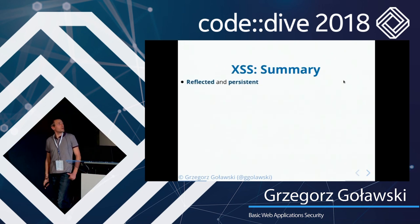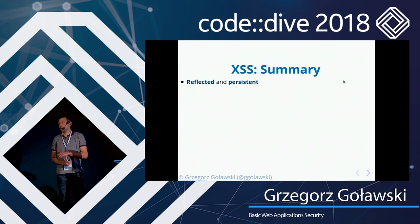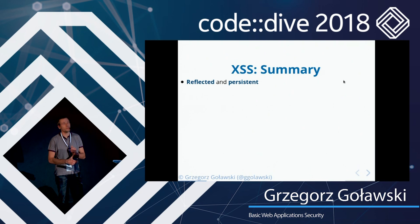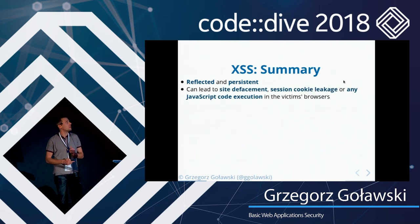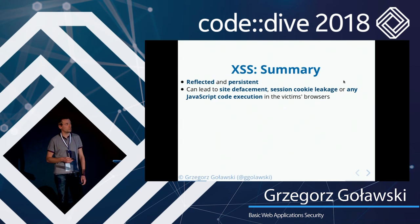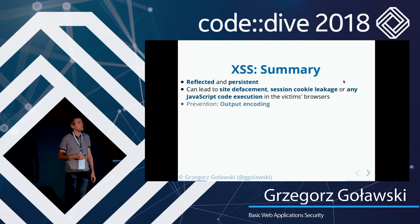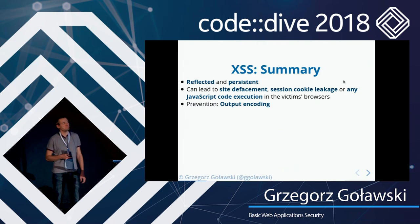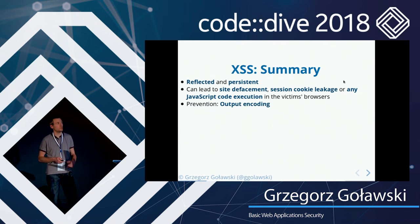To summarize XSS: there are two types — reflected and persistent. XSS can lead to site defacement, session cookie leakage, or any JavaScript code execution in the victim's browser. The prevention technique is to encode the output.